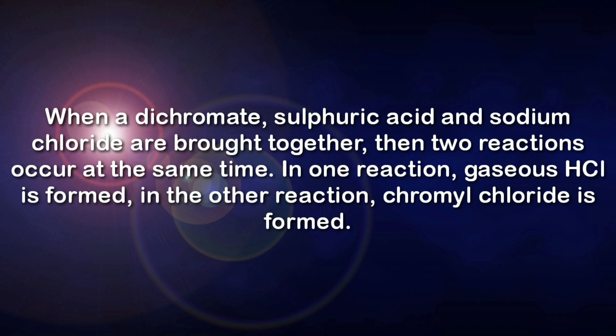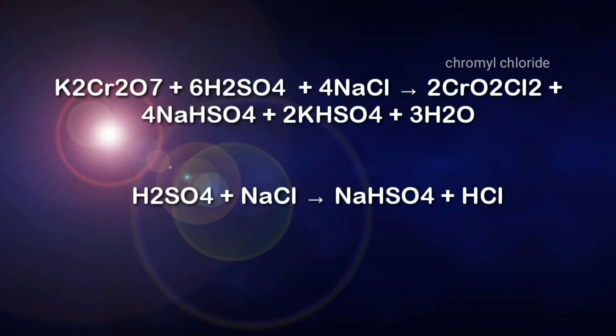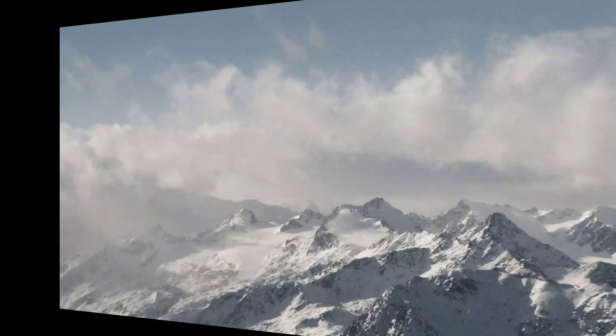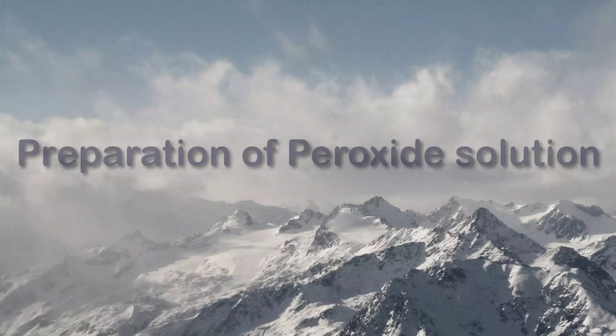When potassium dichromate was allowed to react with sodium chloride in the presence of concentrated sulfuric acid, two reactions took place: in one reaction gaseous hydrochloric acid was formed, and in the second reaction chromyl chloride was formed. This reaction is even more complex — the hydrochloric acid would also react with the dichromate to form chromyl chloride.